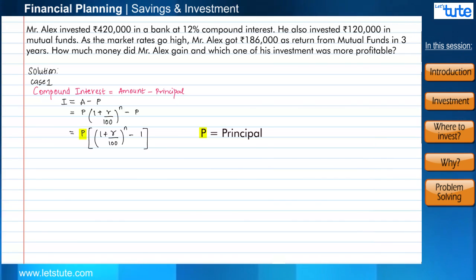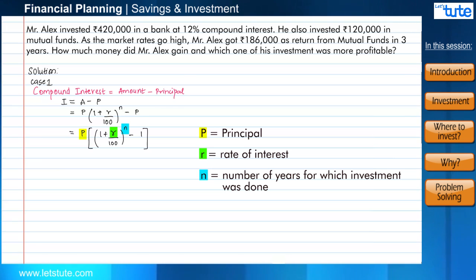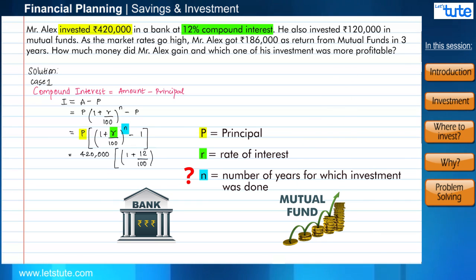Here P is the principal amount, which is given at the start of the investment. R is the rate of interest, and n is the number of years for which investment was done. Now we know that principal amount is ₹420,000 and the rate of interest is 12%, but what is the time period here? Well, since we are comparing two investments to see which gave more profit to Mr. Alex, the time span of both the investments should also be the same, correct? So since mutual funds were invested for three years, we will consider that money in the bank is also invested for three years only.